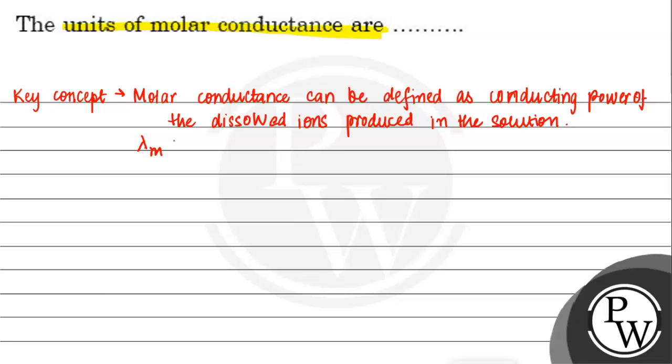In this formula, lambda m is equal to conductivity divided by molarity or concentration, where lambda m is molar conductivity or molar conductance, kappa is conductivity, and m is molarity, or we can say concentration.